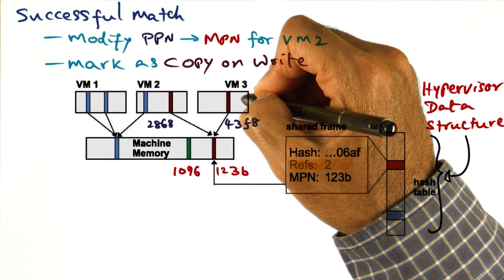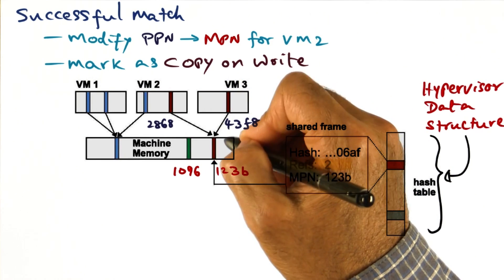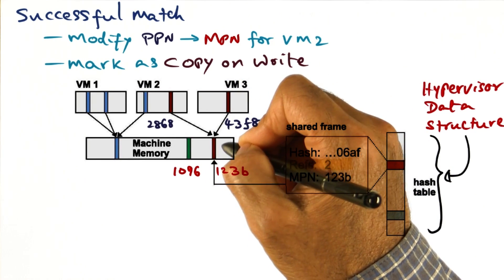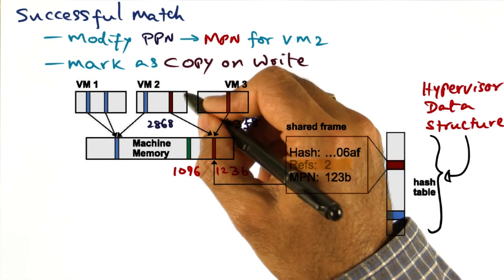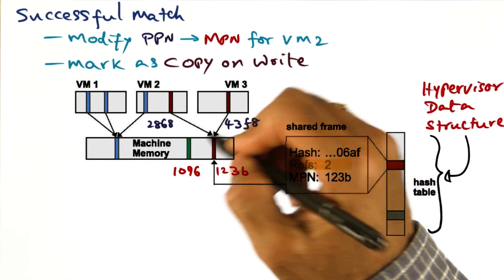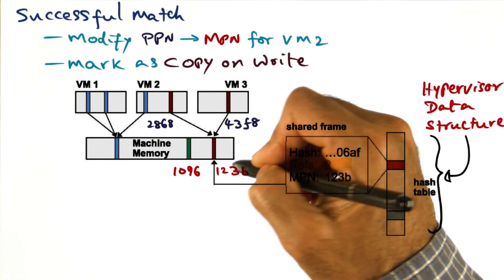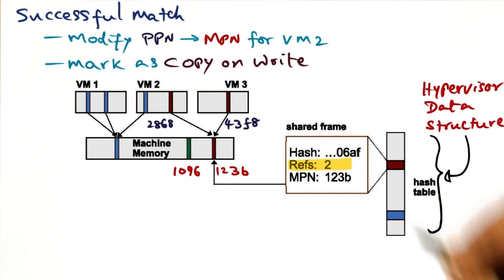for the integrity of the system, we have to make a copy of this page and change the mappings for those PPNs to go to different MPNs. That's the reason that we want to do this copy on write.